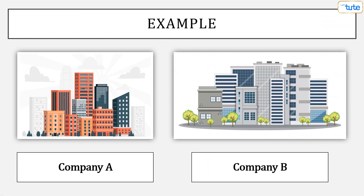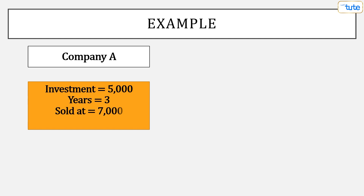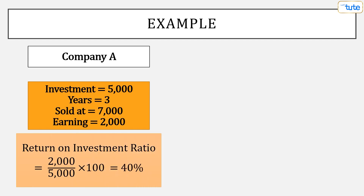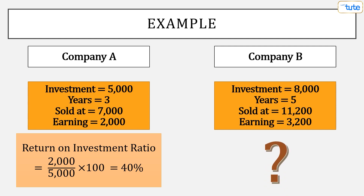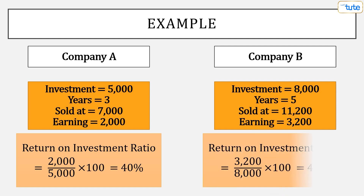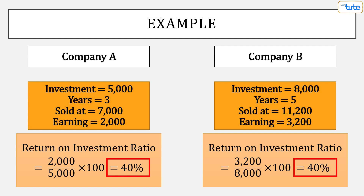Suppose there are two companies A and B. We made an investment in A worth 5000 and sold it off after 3 years for 7000. So here, the return earned is 2000, giving a return on investment of 40%. Now in company B, we made an investment of 8000 and sold it off after 5 years at 11200. Here the return earned is 3200, and the ROI is also 40%. So it seems that we have earned the same return in both companies. But to earn a 40% return, the time period for company A is 3 years while for company B it is 5 years. Thus, the ROI has not taken into account the holding period or the passage of time.